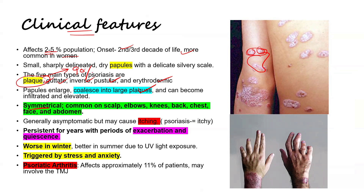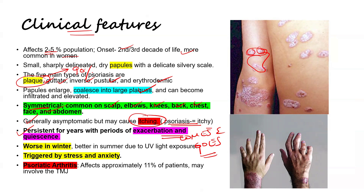The lesions are symmetrical and may occur on both sides of the body. They are common on the scalp, elbows, knees, back, chest, face, and abdomen. They are generally asymptomatic but may cause itching — psoriasis literally translates to 'itchy disease' in Greek. It is a disease that persists for years with periods of exacerbation and remission, with the goal that remission should be longer than exacerbation.